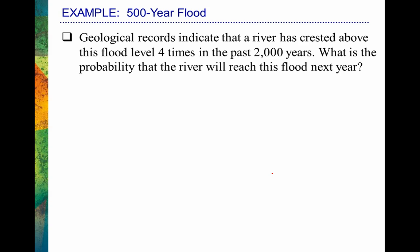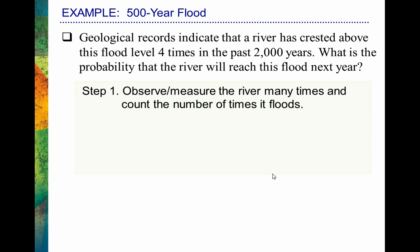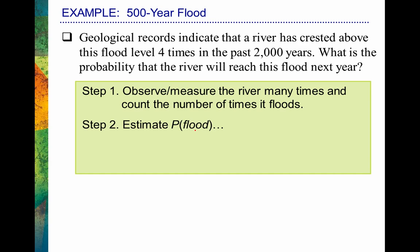Geological records indicate that a river has crested above a particular flood level four times in the past 2,000 years. What is the probability that the river will reach this flood level next year? To estimate the probability of some type of flood, we look over the long run — we know it's happened four times over the past 2,000 years, so it's relatively unlikely. To estimate the probability of a flood in any given year, we look at the number of times the event happened — four times — over the total number of observations: 2,000 years. So that reduces to 1 over 500.